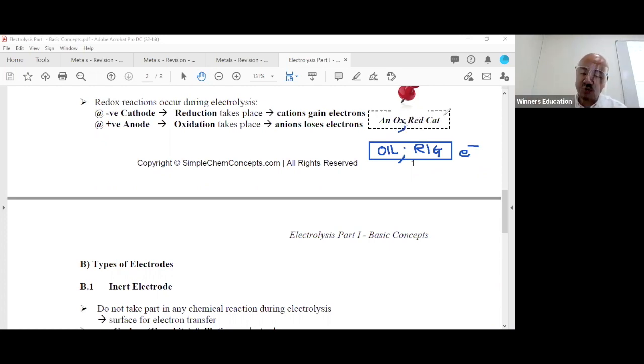In redox I gave you this phrase: oil rig. Remember that? Oxidation is the loss of electrons. Reduction is the gain of electrons. All schools should have taught you this. I'm going to teach you another phrase: An Ox Red Cat. This refers to cathode. Reduction always occurs at the cathode. Oxidation occurs at the anode.